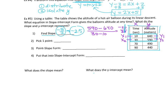The slope is −5/2 or −2.5. Pick a point — let's use (10, 640). In point-slope form: y − 640 = −2.5(x − 10).